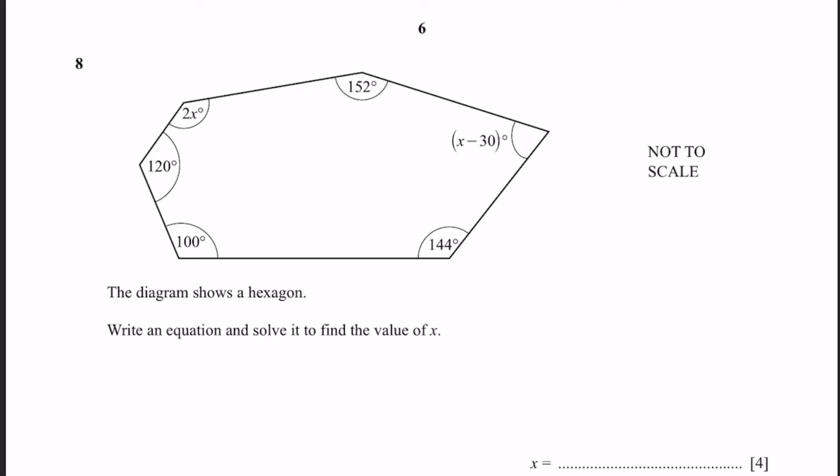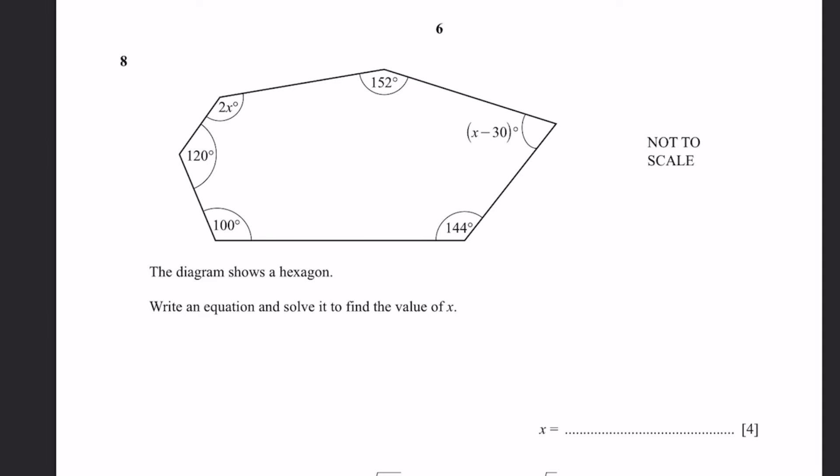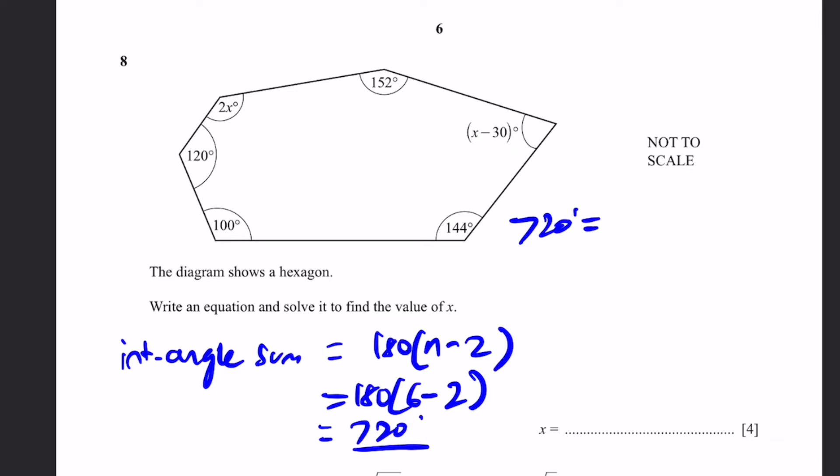Now you can go to question 8. The diagram shows a hexagon. Write an equation and solve it to find the value of x. The interior angle sum of a hexagon is going to be equal to 180 times n minus 2 where n is number of sides. 180 times 6 minus 2 since there's a hexagon, we get 720 degrees. That'll be equal to all the sum of these angles: 2x plus 152 plus x minus 30 plus 144 plus 100 plus 120. That means 3x plus 486 equals 720. That means 3x equals 234 degrees and when you get x we simply divide 234 by 3 to get 78 degrees.